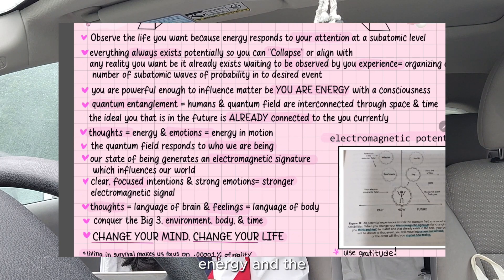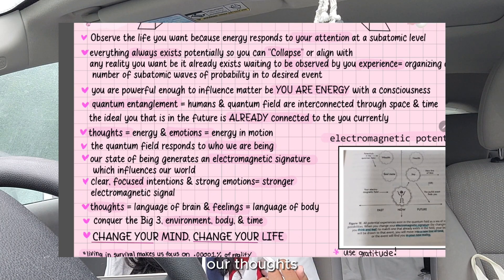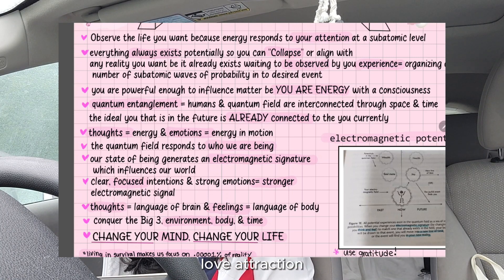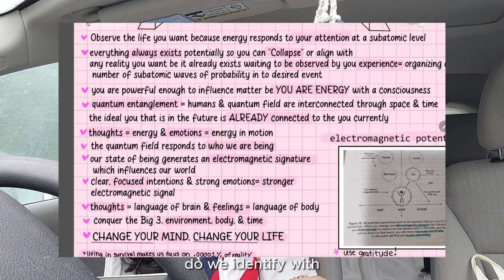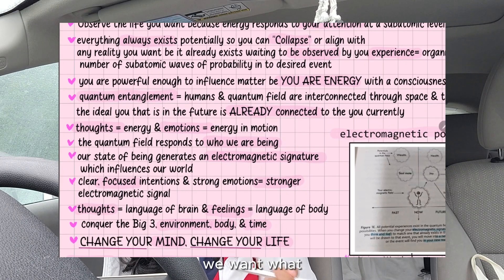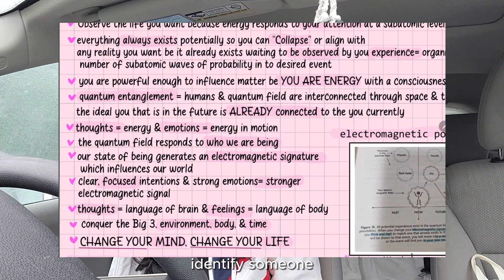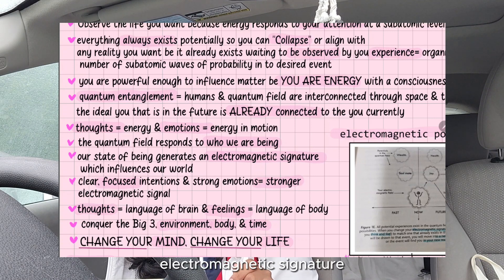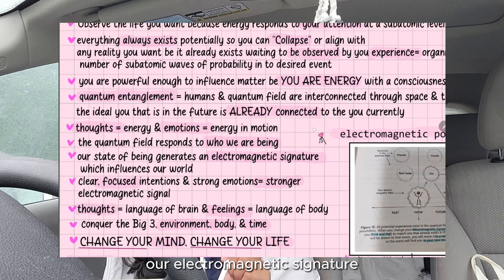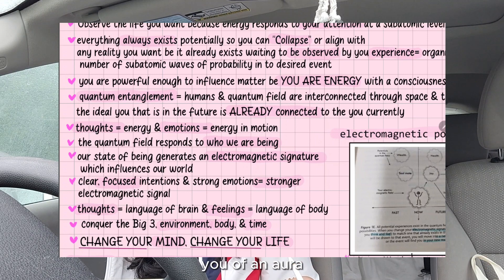Whatever thoughts we have are energy, and emotions are energy in motion — we can manifest anything we want with our thoughts. But emotions push the energy in motion. I always hear law of attraction teachers say the universe doesn't respond to what we want — it responds to who we are being. That's the same concept quantum field theory talks about. Who do we identify as? It's not "I want this" — then you simply identify as someone who wants it. Also, our state of being generates an electromagnetic signature which influences our world — basically our aura, what we attract, what we experience, what type of people and emotions we encounter daily.